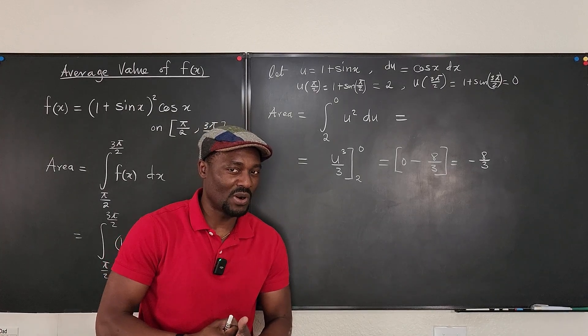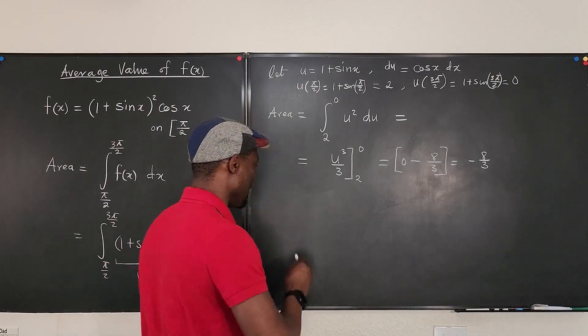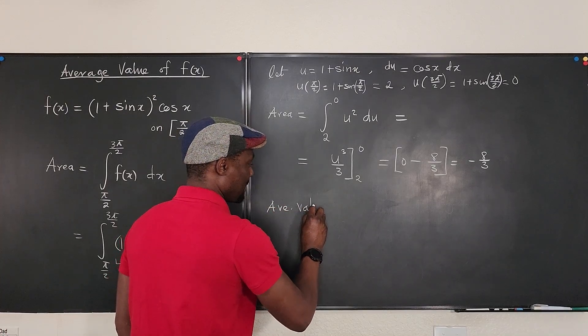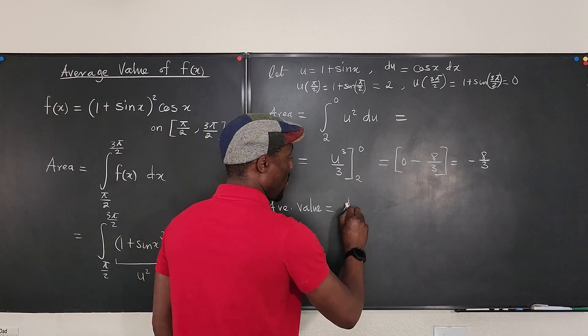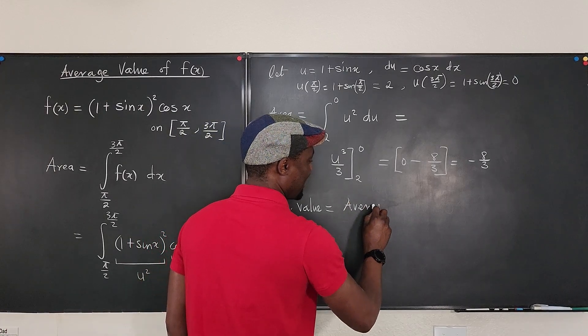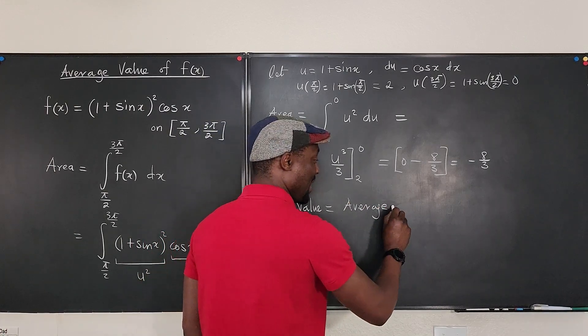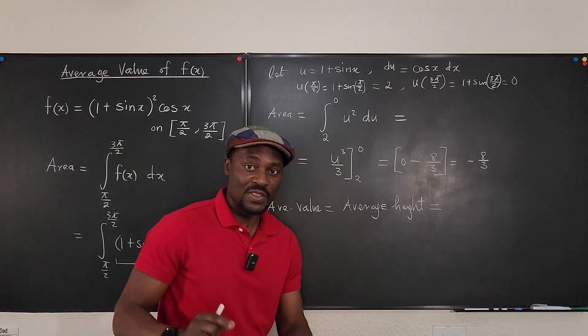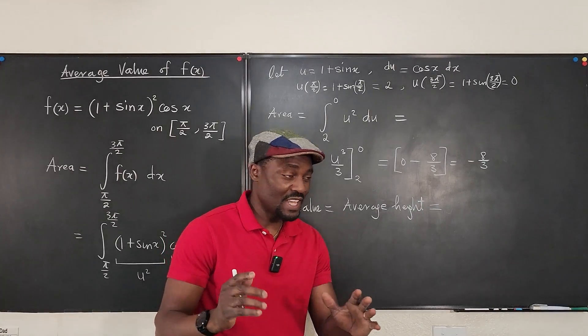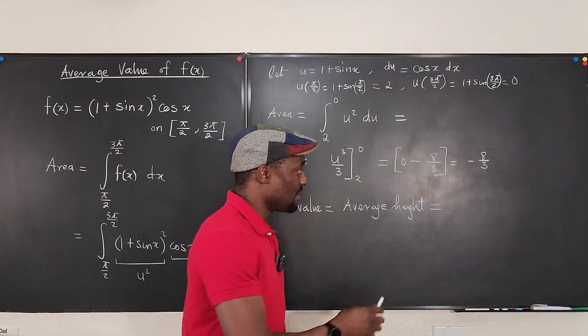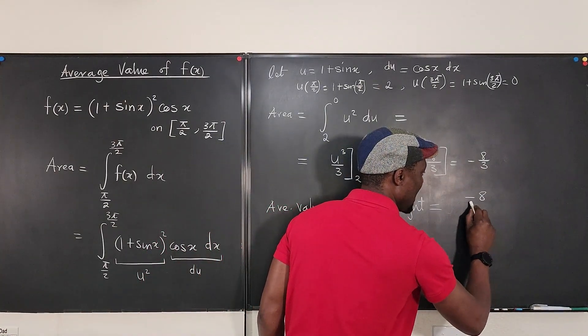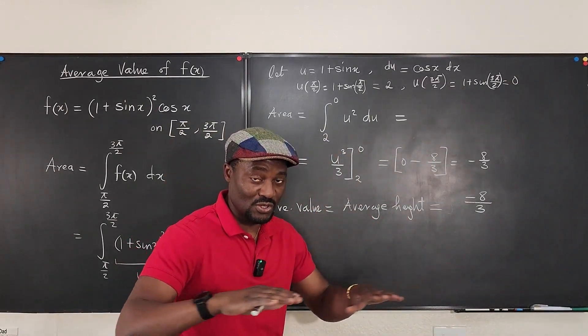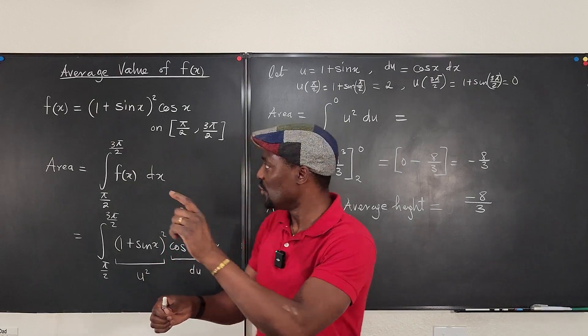But what am I looking for? I am looking for the average value. So, we say that average value is what I call the average height. So, this is where it gets tricky. When you have this minus 8 over 3, which is the area - remember, it is the area divided by the distance you cover horizontally.